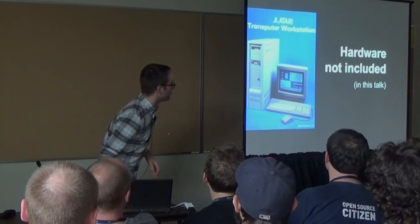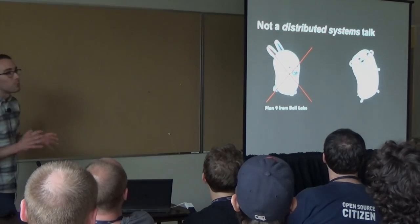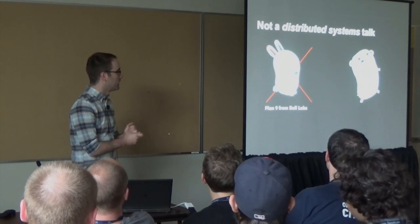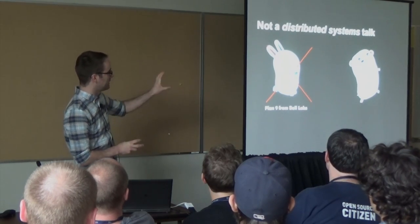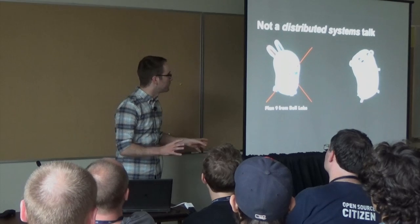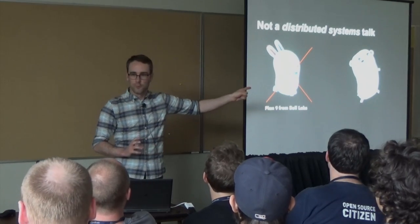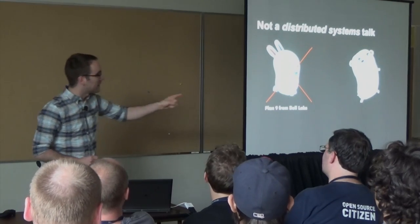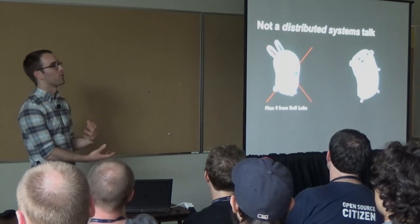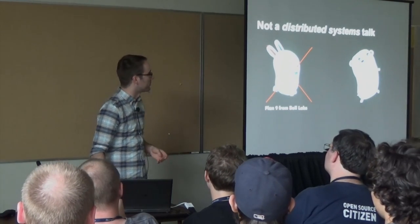This also isn't a distributed systems talk, though that's super cool stuff. Plan 9 is an operating system built to be distributed. Go is a language built with concurrency at the core — that's what we're talking about.